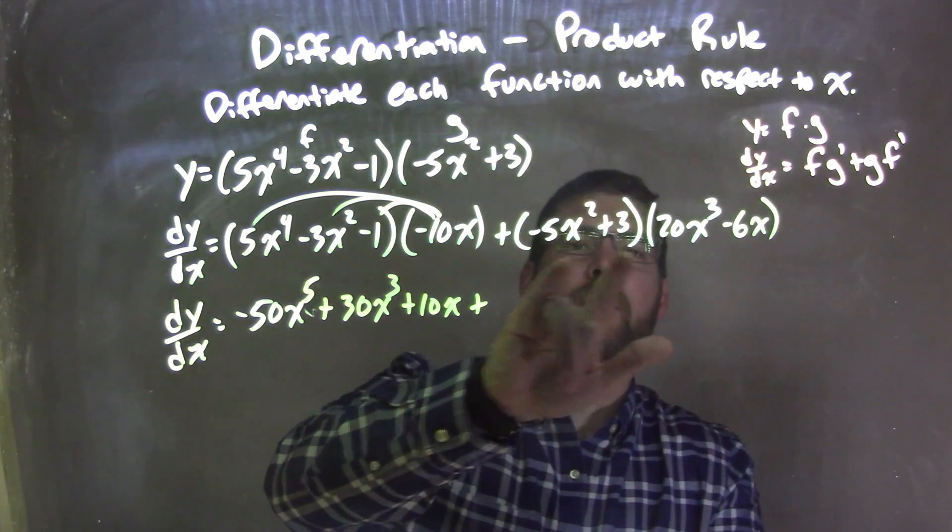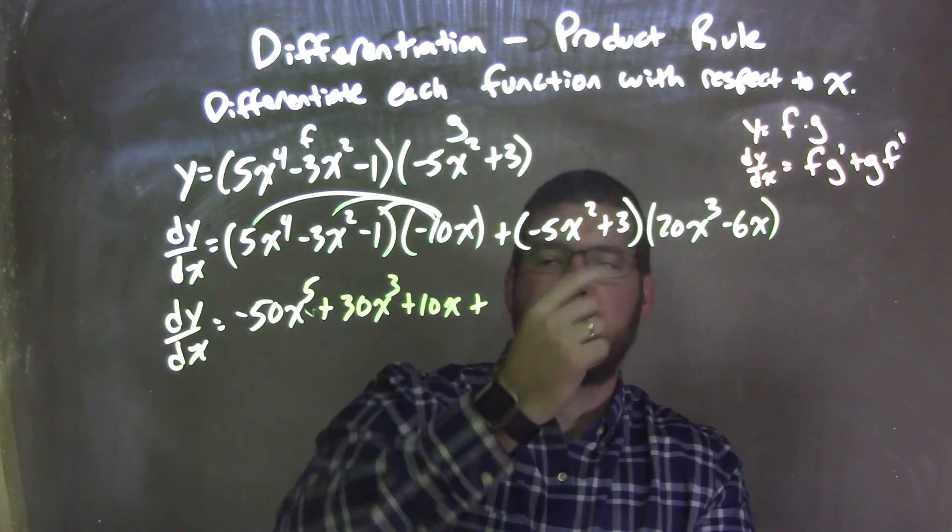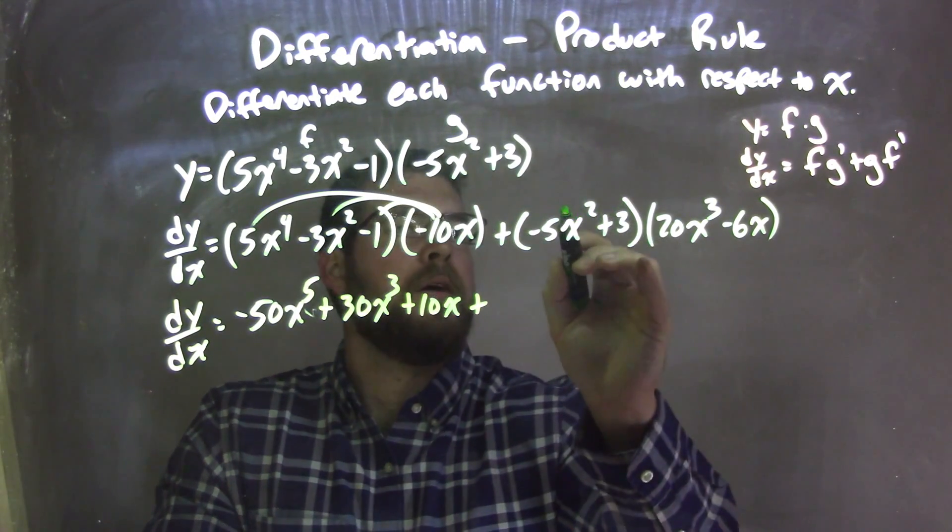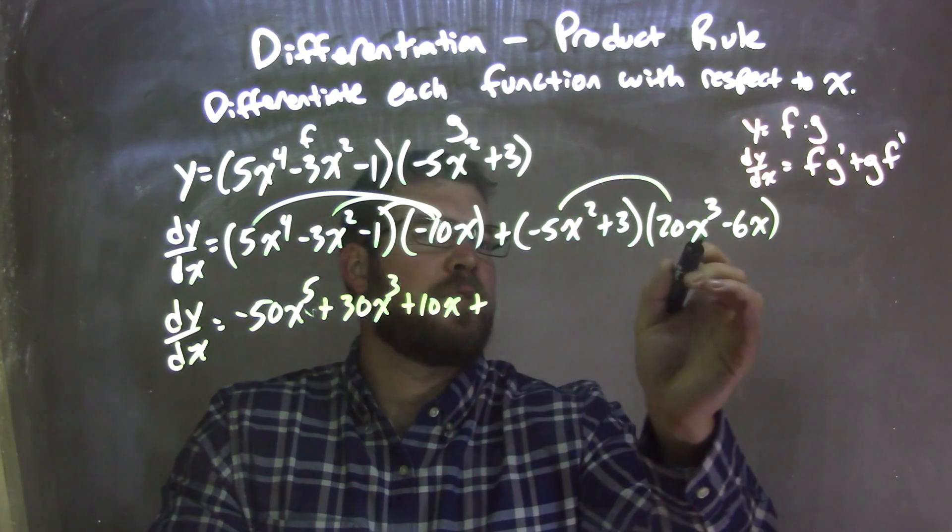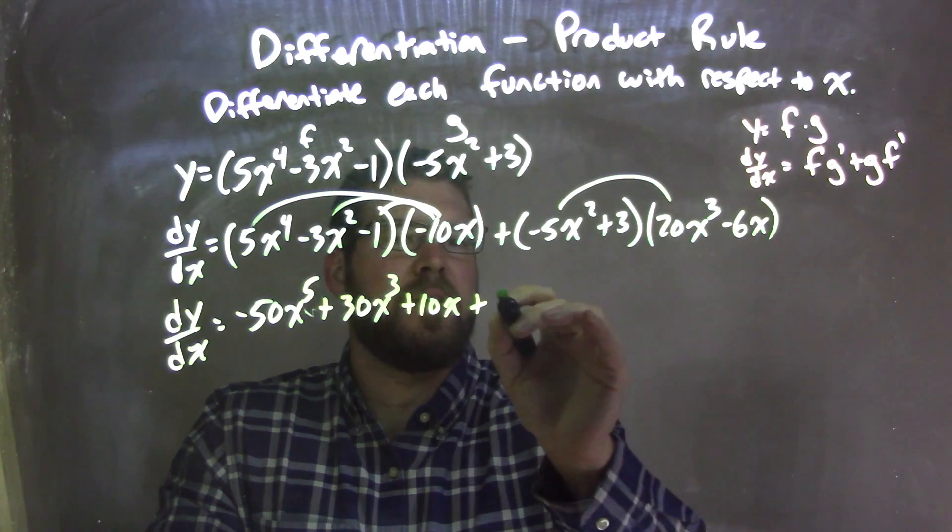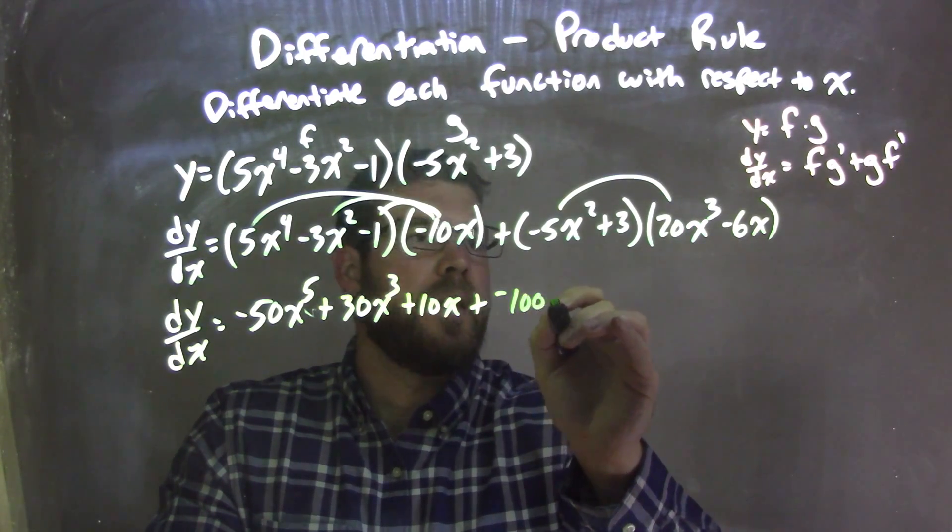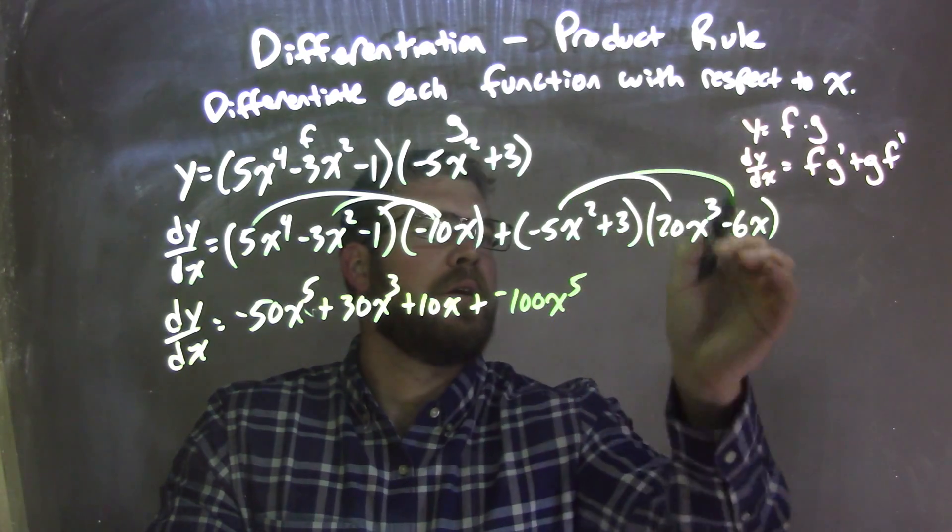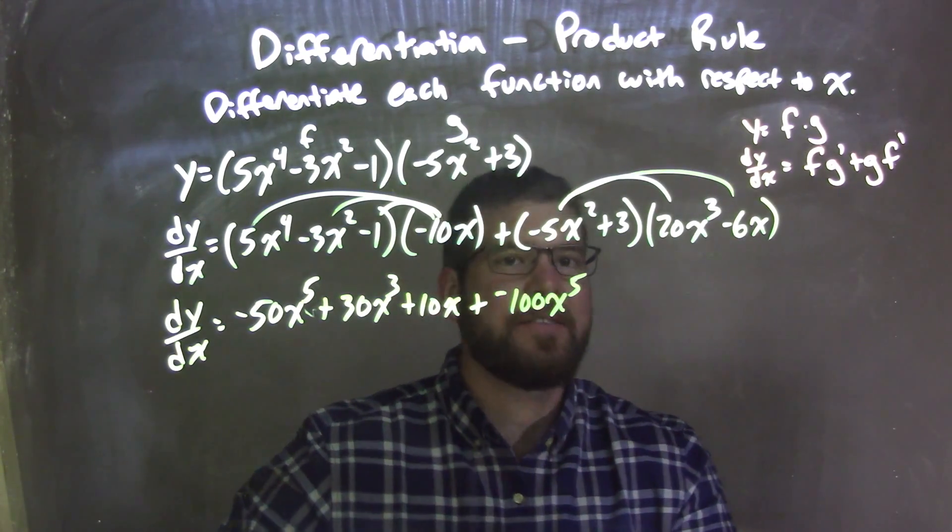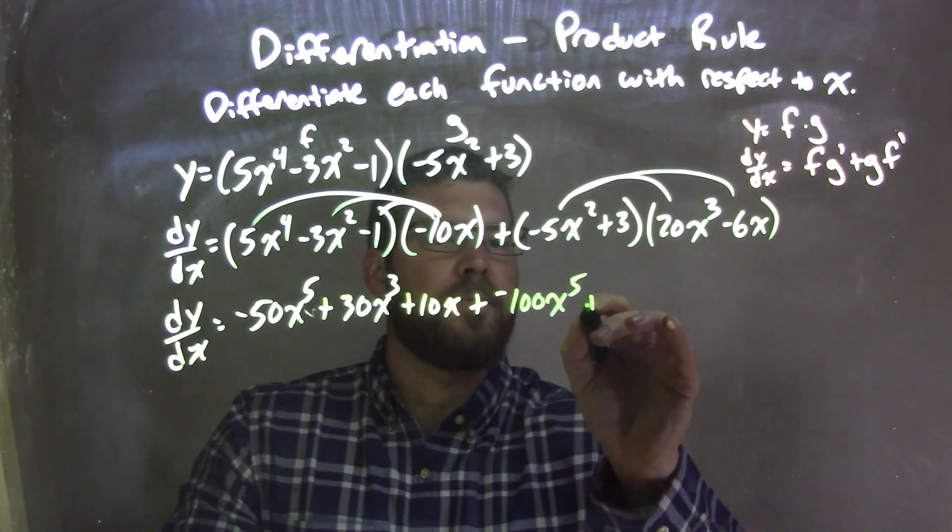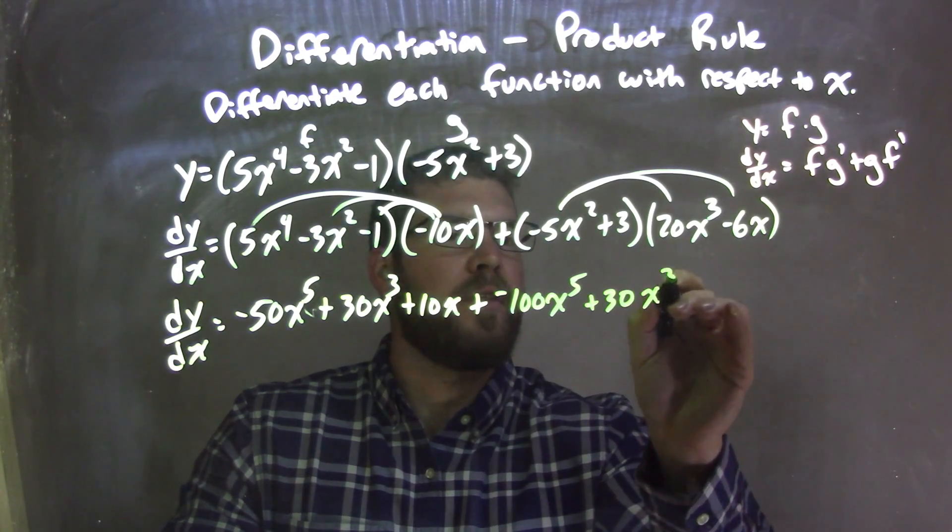Let's distribute the next parts. We have two parts here, two parts here, so eventually we're going to have four terms. Negative 5x squared times 20x to the 3rd is negative 100x to the 5th. Negative 5x squared times negative 6x is positive 30x to the 3rd.